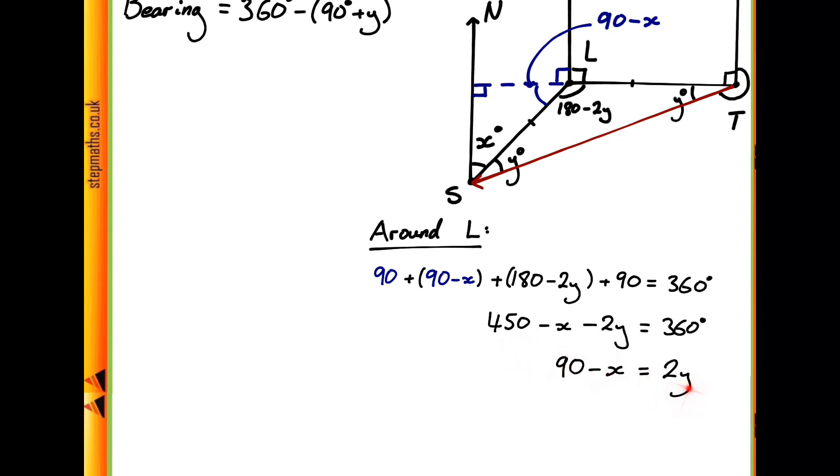So all we have to do next is just divide by 2, giving us 45 minus x over 2. Now where the 45 is just 90 divided by 2. So with this expression, we can substitute this into our expression for the bearing.